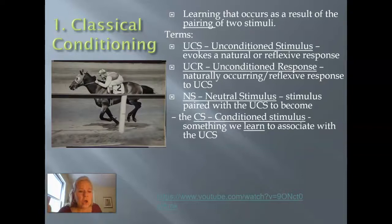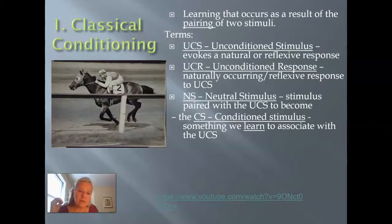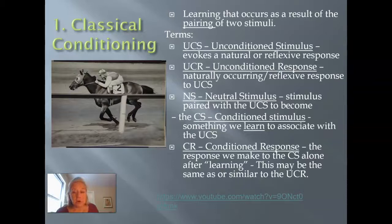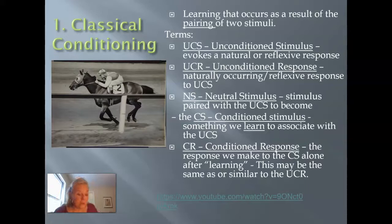After about four or five pairings, they threw the whip aside and Seabiscuit ran at the sound of the bell alone — he had learned that the bell predicts the whip. The neutral stimulus, now called the conditioned stimulus (CS), elicits a response on its own. The conditioned response (CR) is the response made to the conditioned stimulus alone after learning has occurred. In this case the CR is the same as the UCR, though sometimes they can be slightly different.